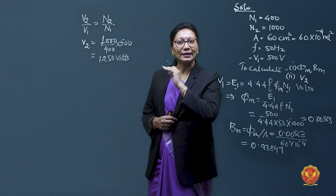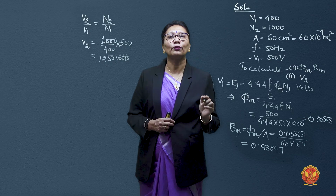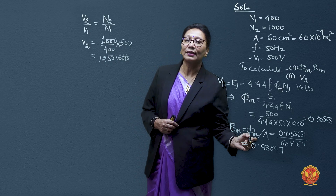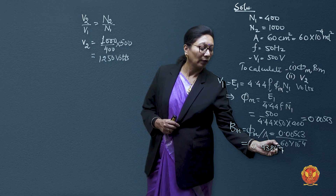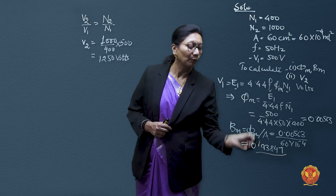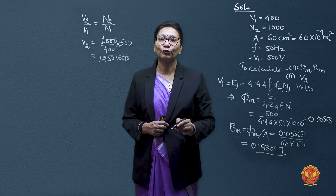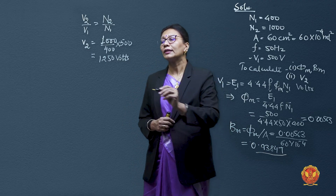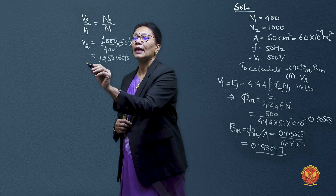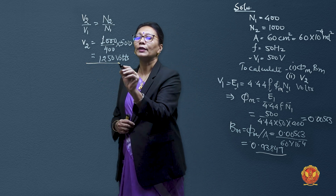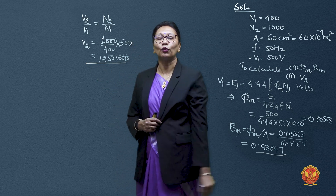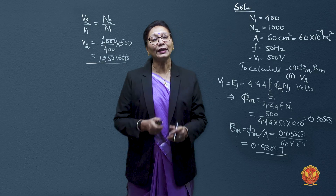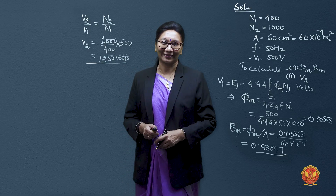To summarize the answers: the maximum flux density in the core is 0.9384 Tesla, and the voltage induced in the secondary winding is 1250 volts. This completes the solution for this numerical.